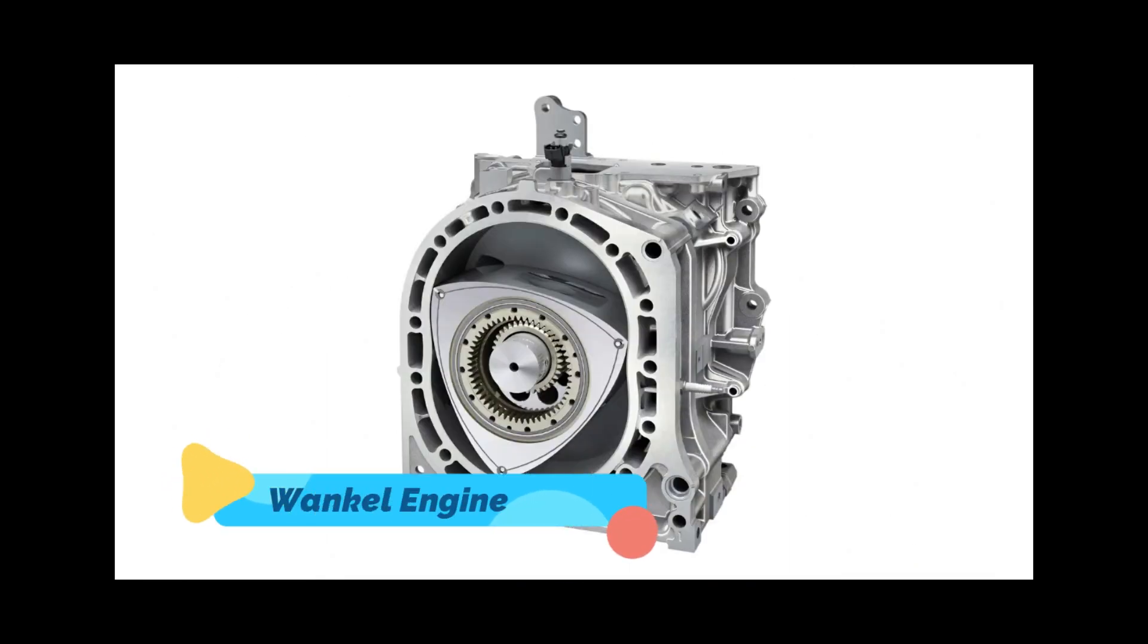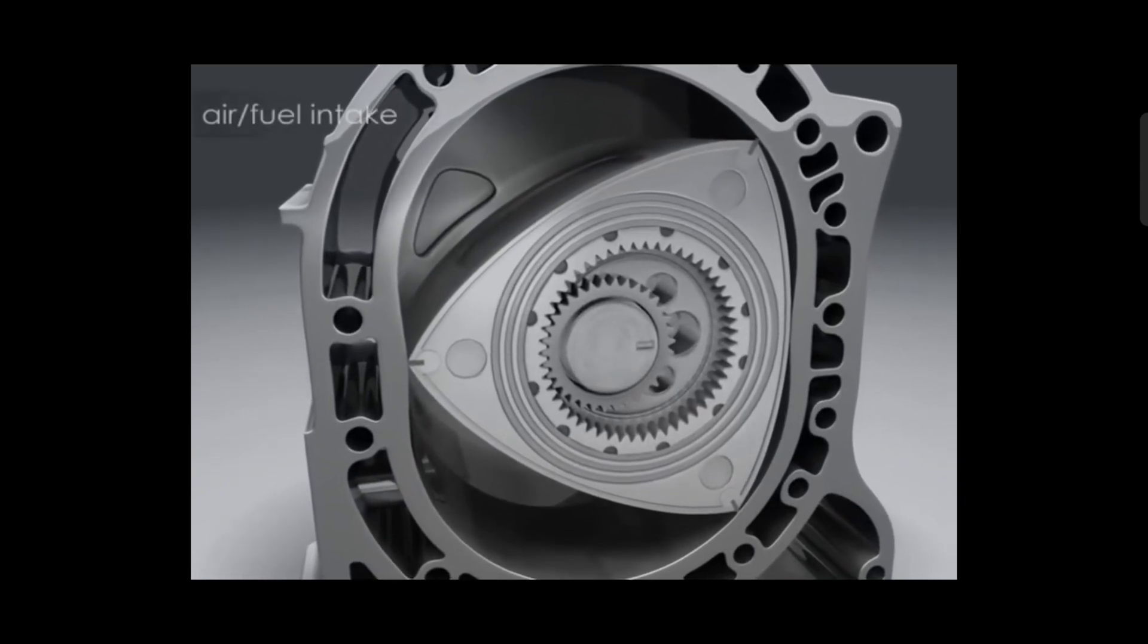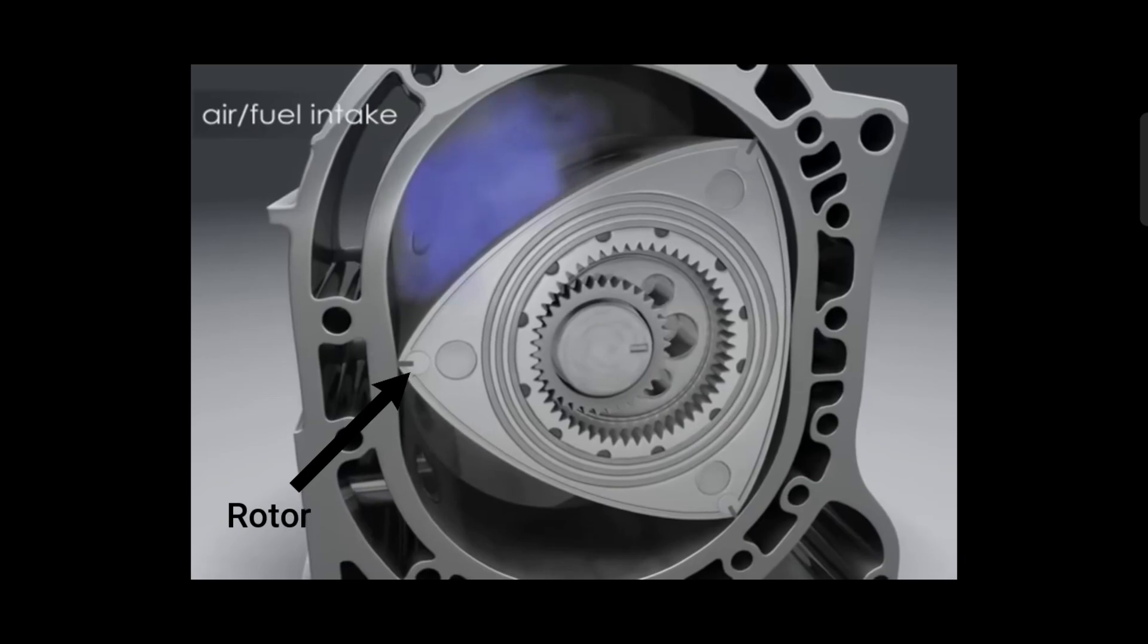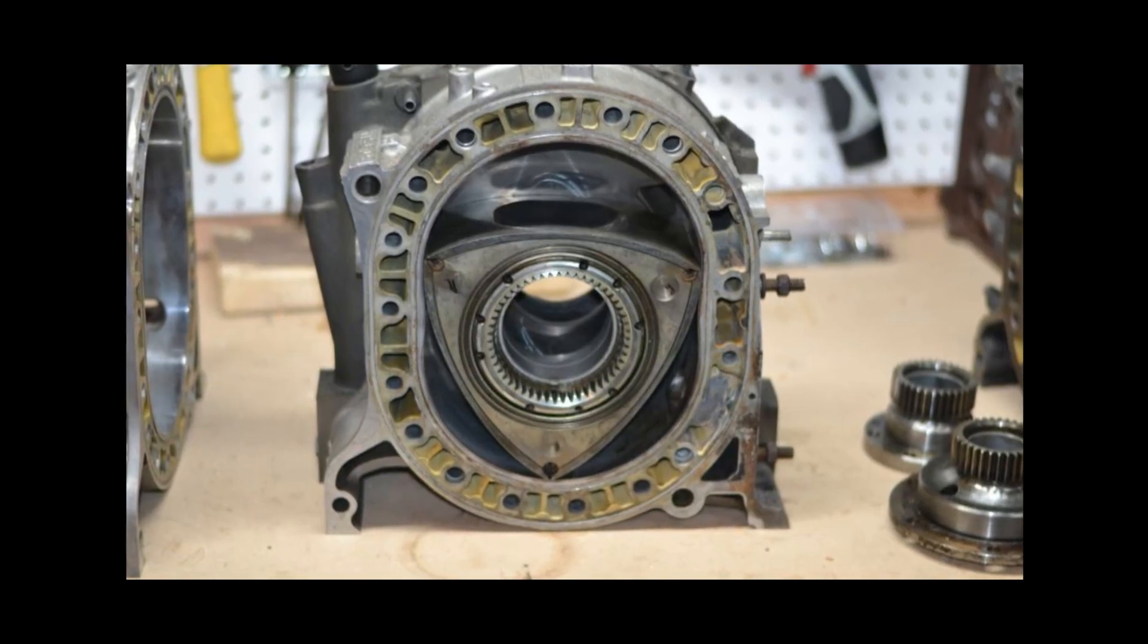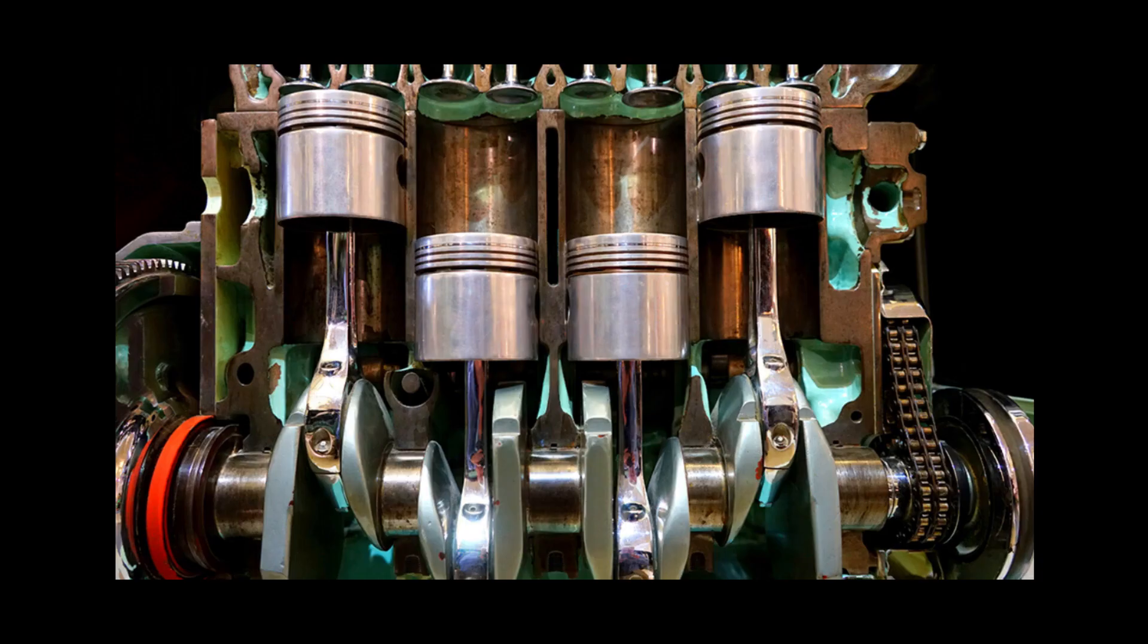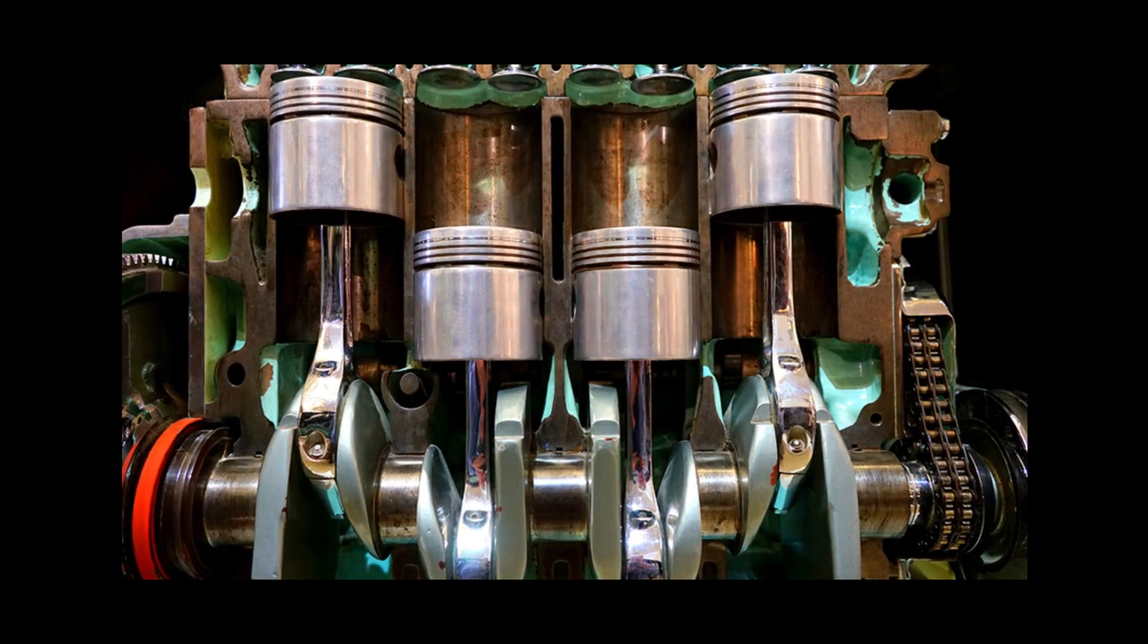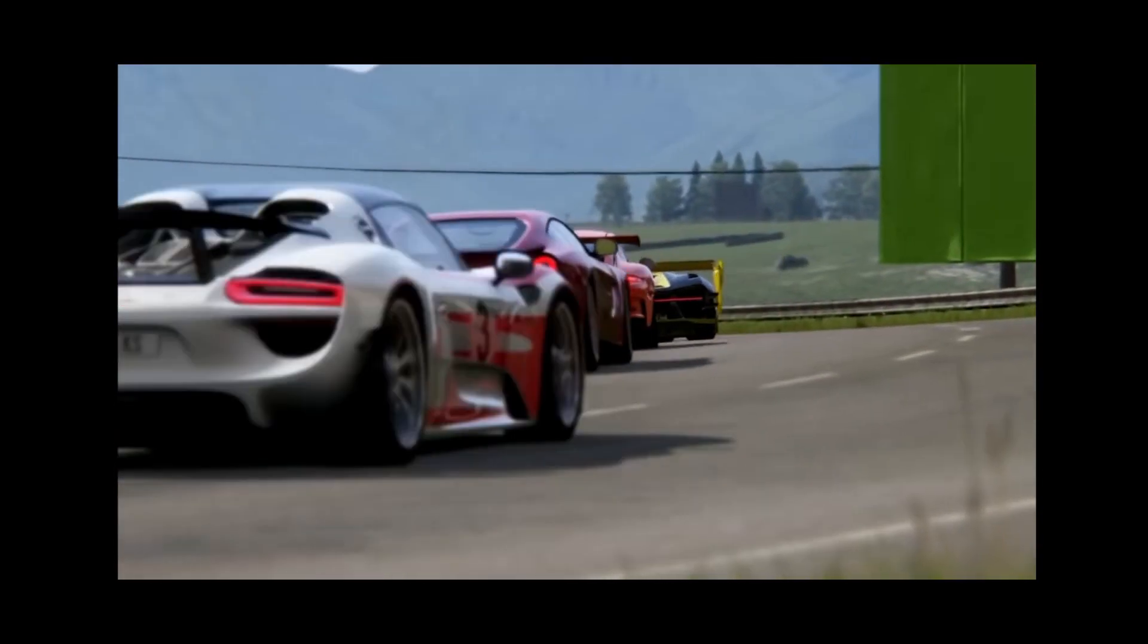The Wankel engine is also known as a rotor engine because it uses an eccentric rotary system to convert pressure into rotating motion. It is simpler, smoother, and much more compact compared to its more popular competitor, the reciprocating or piston engine. Since Wankel engines produce more power pulses per revolution compared to two-stroke and four-stroke engines, they are generally used in racing cars.